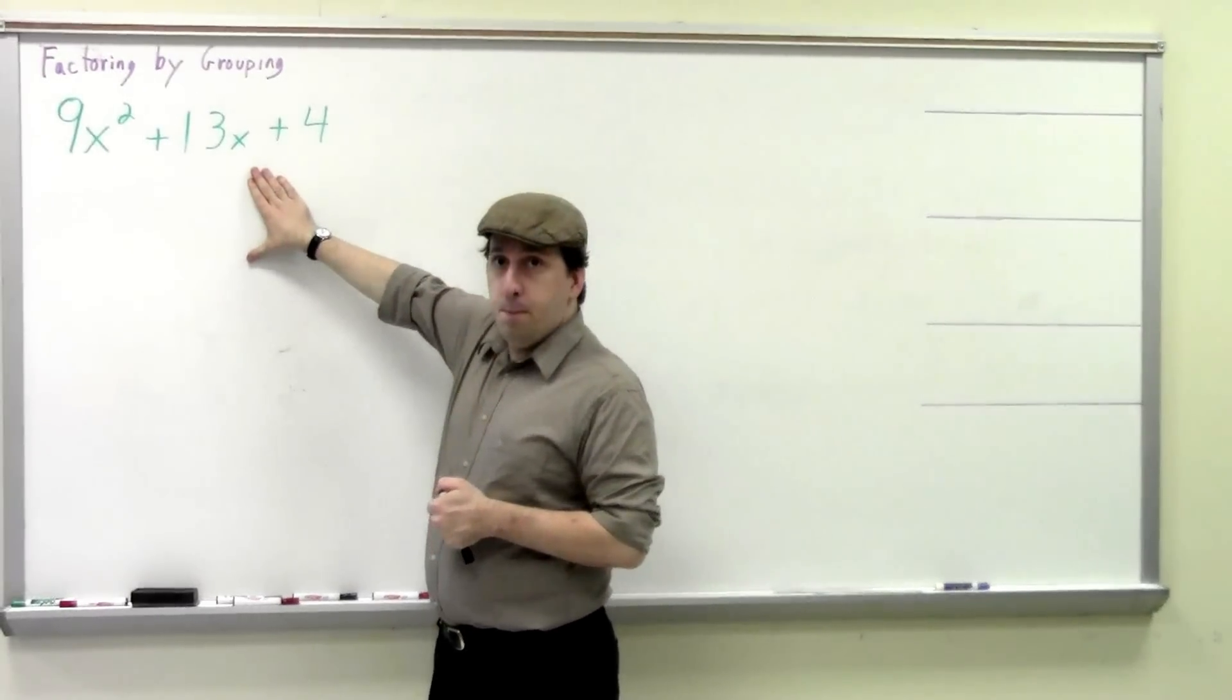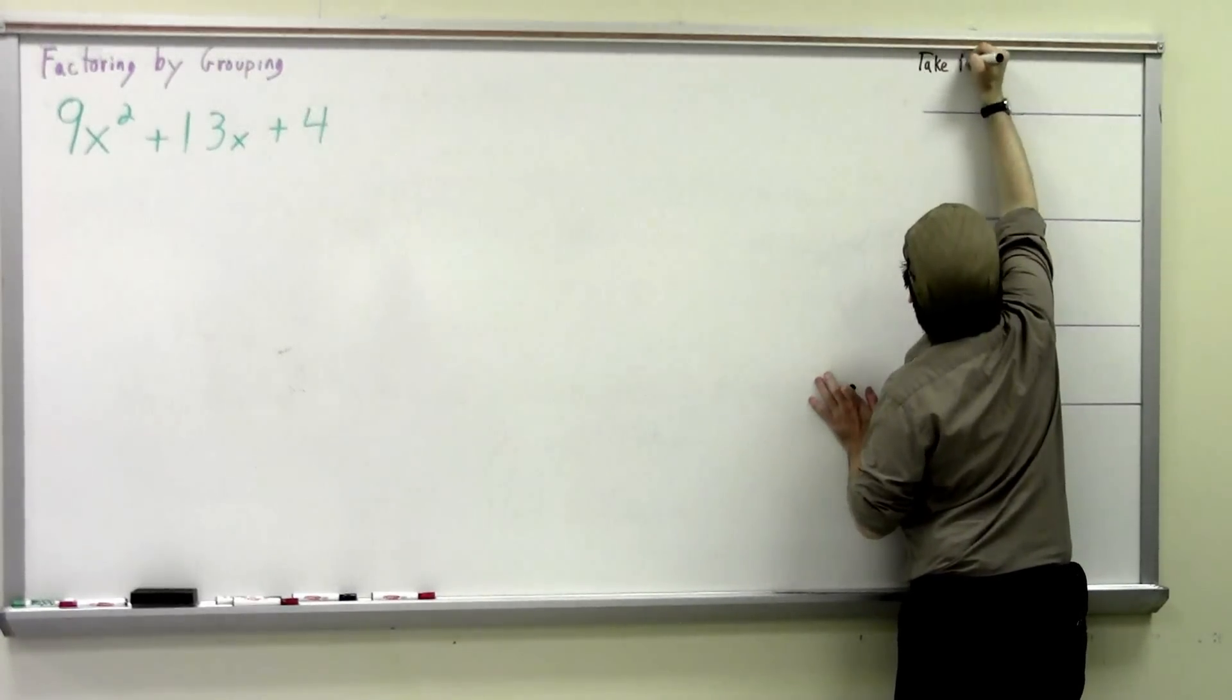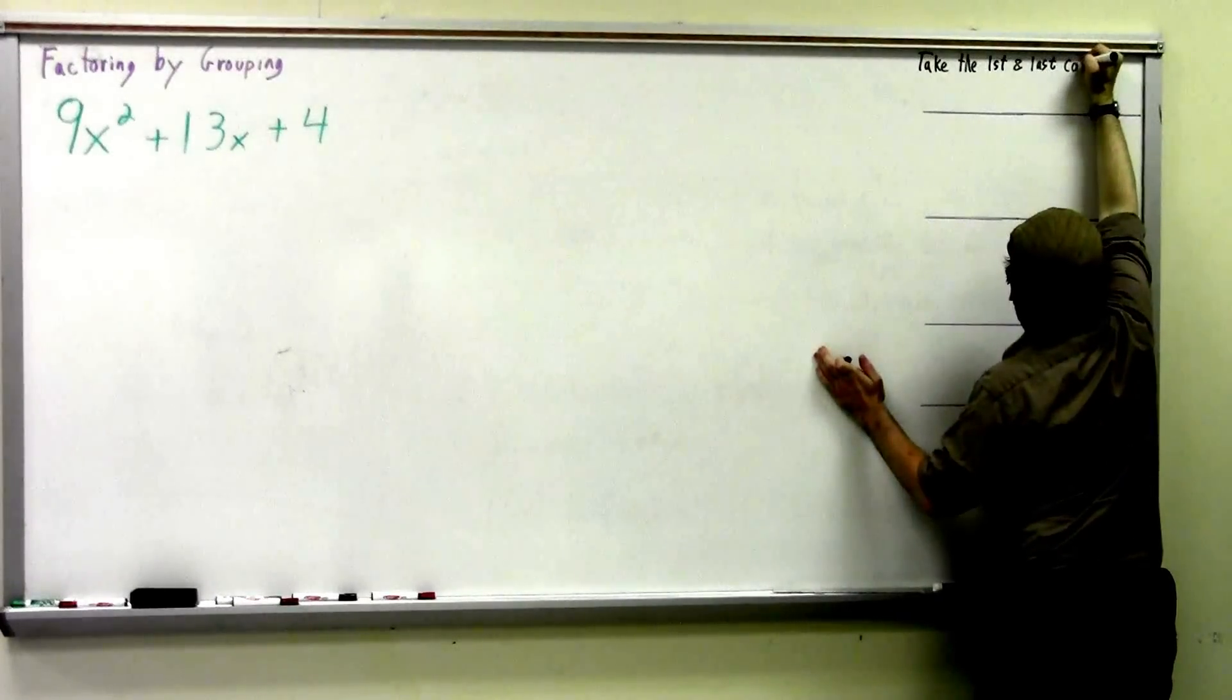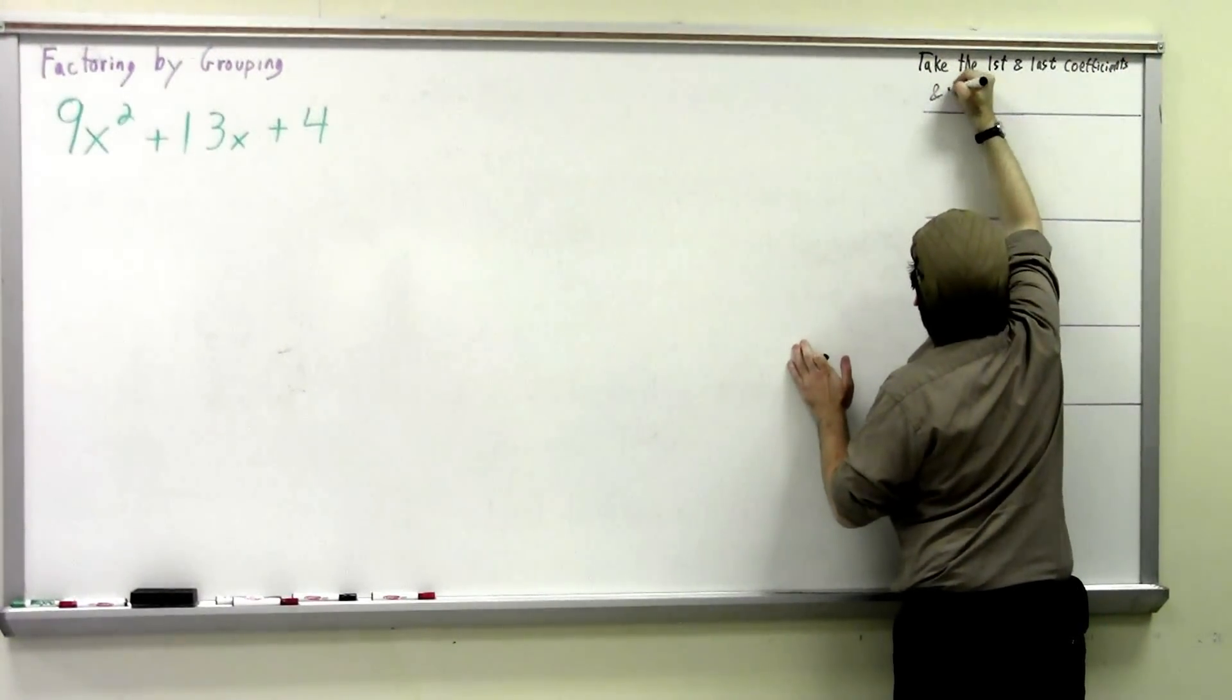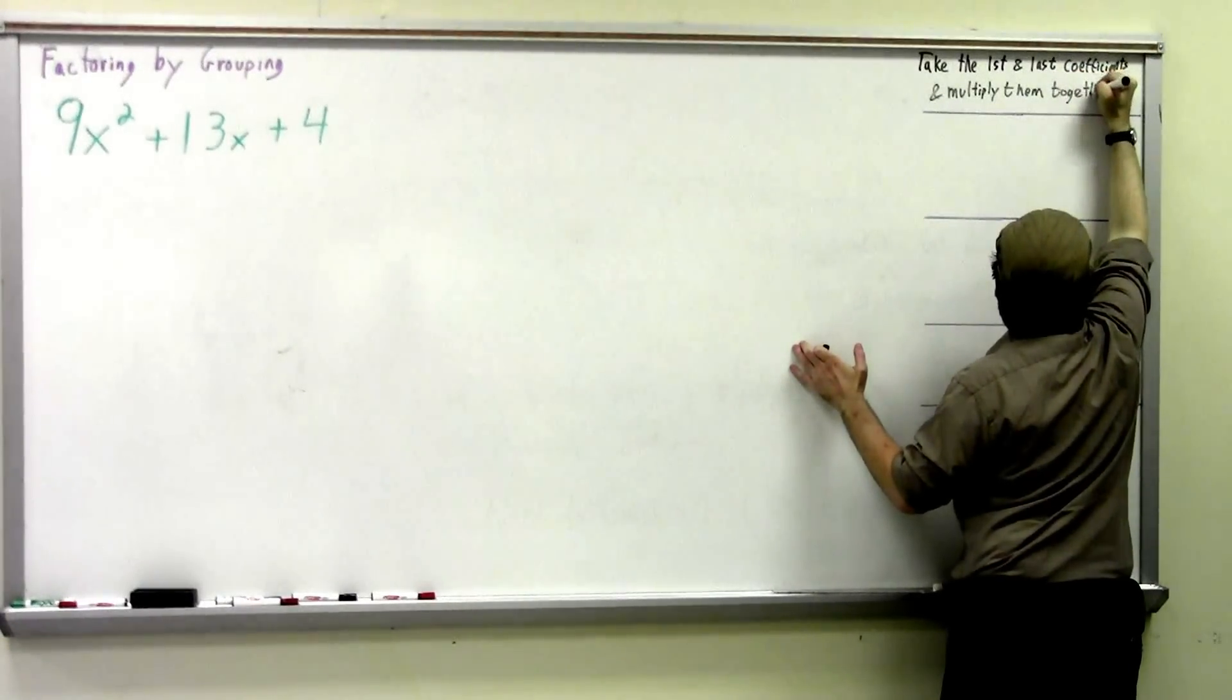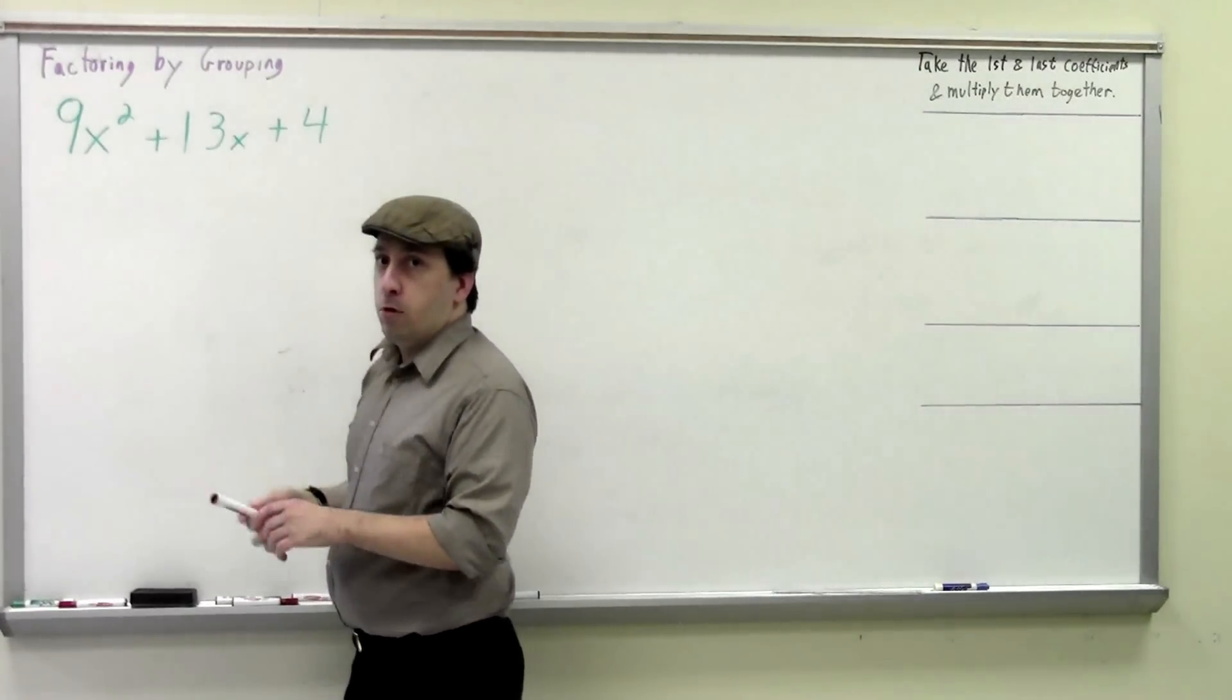We're going to be using this as our example. And the way you start off, the first step is take the first and the last coefficients and multiply them together. So in this case, we're going to multiply 9 and 4 together to get 36.